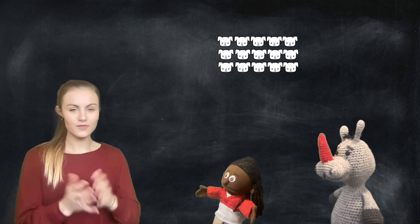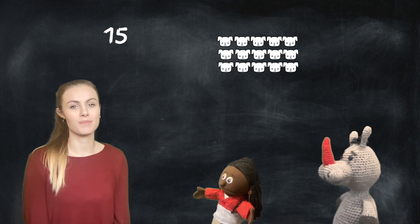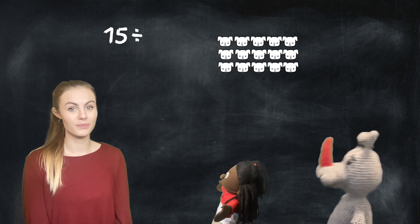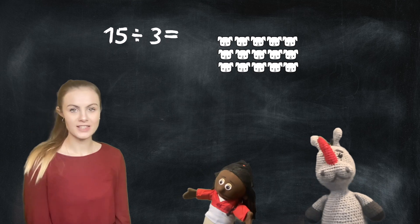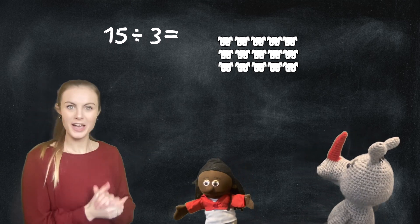Well, our whole is 15 and then we need to show that we are sharing with our division symbol and then we're dividing them by 3 people. So this reads as 15 divided by 3 equals... Shall we work it out? Let's share them equally one at a time.